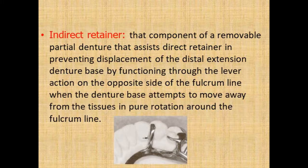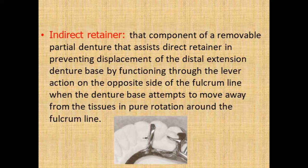Now getting into our topic — the indirect retainer — which is defined as that component of a removable partial denture that assists the direct retainer in preventing displacement of the distal extension denture base by functioning through lever action on the opposite side of the fulcrum line when the denture base attempts to move away from the tissues in pure rotation around the fulcrum line. This is the GPT definition.